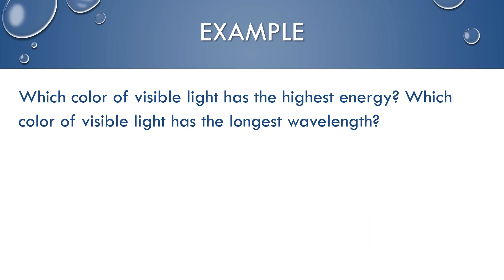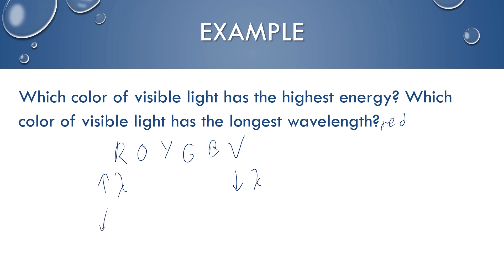Example question: which color of visible light has the highest energy, and which has the longest wavelength? Going through the rainbow — red, orange, yellow, green, blue, violet — red has the longest wavelength and therefore the lowest frequency and lowest energy. Violet has the shortest wavelength, the highest frequency, and the highest energy. So violet is the answer for highest energy, and red has the longest wavelength.